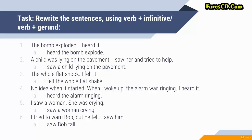This is one of the cases in which you just can't hear part of the action. Number two: A child was lying on the pavement — I saw her and tried to help. You combine them and the idea is that you saw part of the action: I saw a child lying on the pavement. Verb plus verb plus -ing. You saw part of the action.